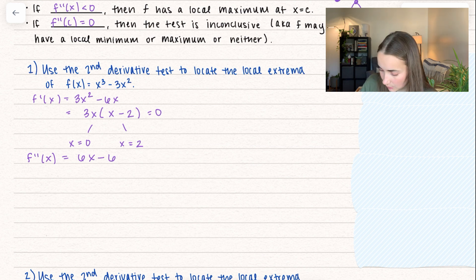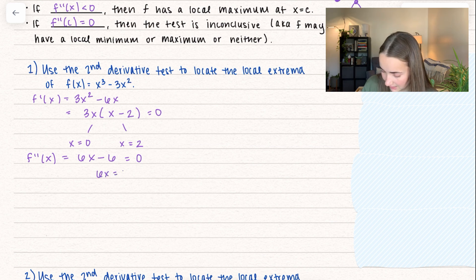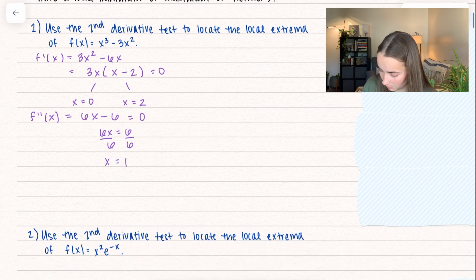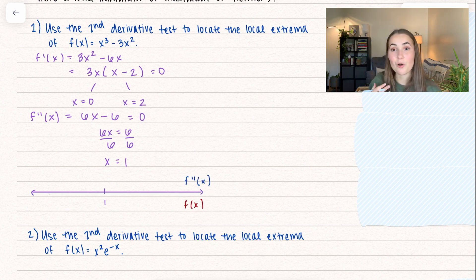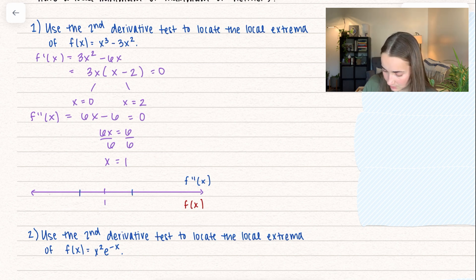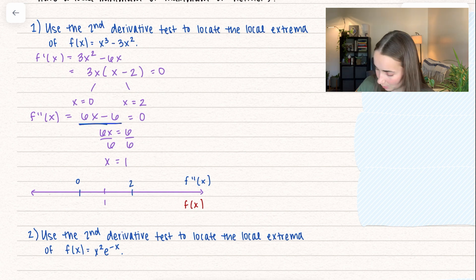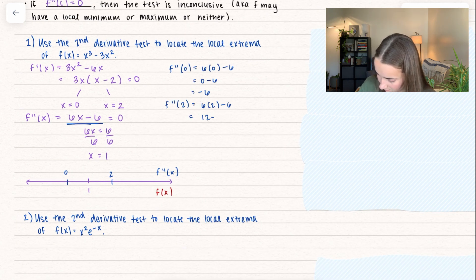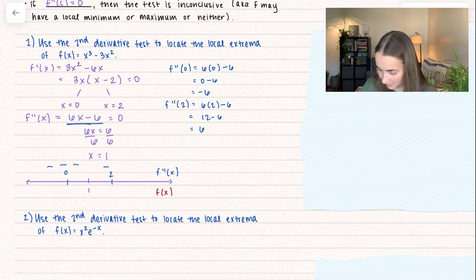We can plug in the critical values or use a number line. I'll use a number line by setting the second derivative equal to 0 to find the inflection points. Adding 6 over and dividing by 6 gives x equals 1. I choose test points 0 and 2 and plug them into the second derivative. Plugging in 0 gives negative 6, and plugging in 2 gives positive 6, so when we're less than 1 we're concave down, and when we're greater than 1 we're concave up.